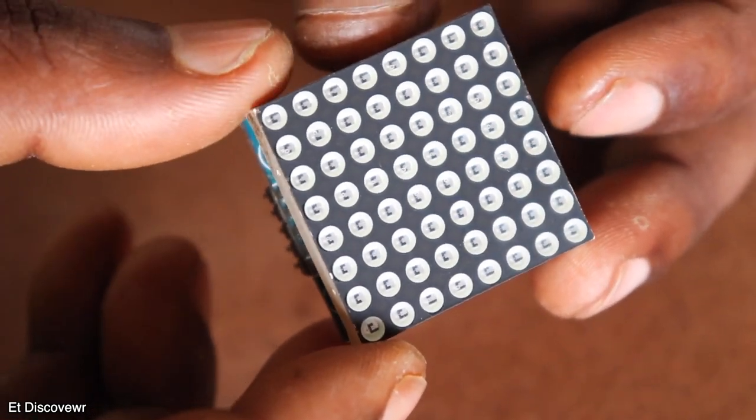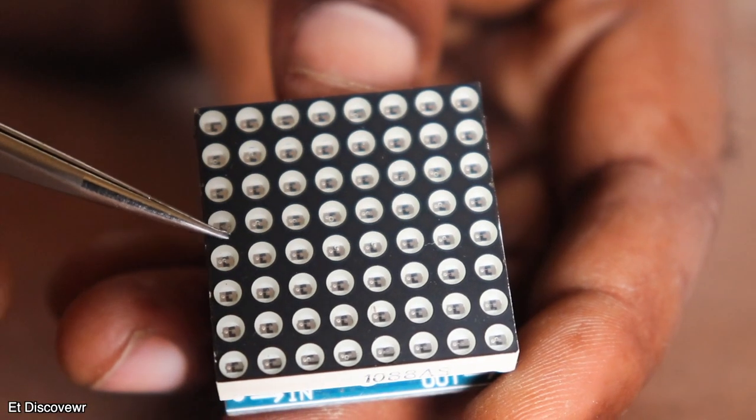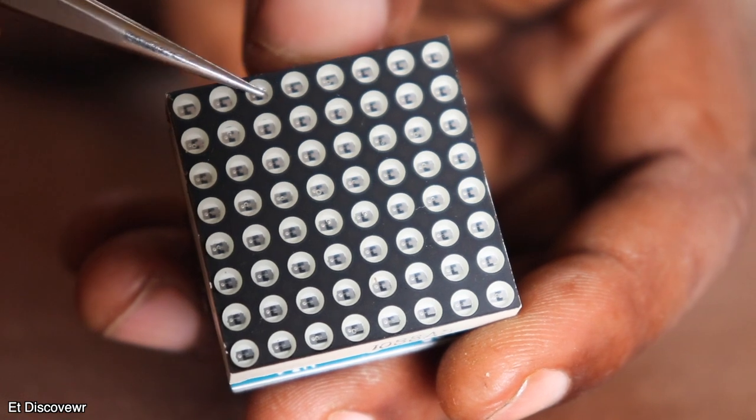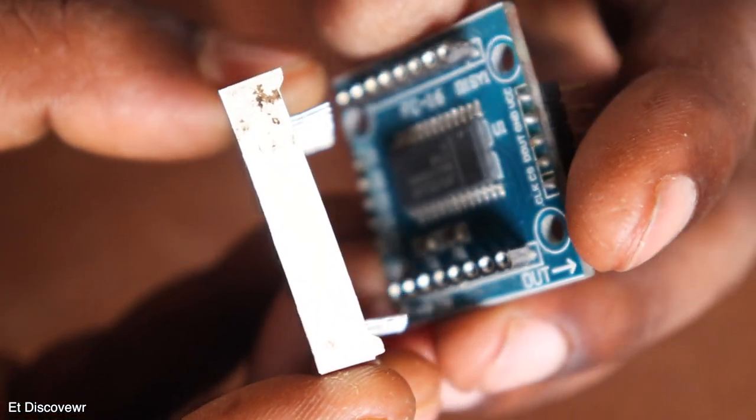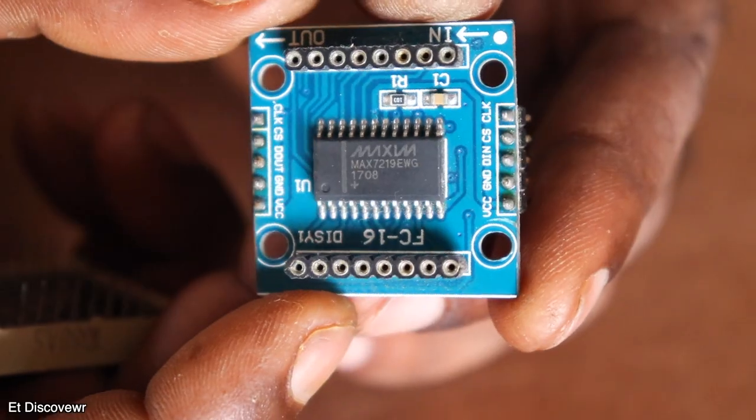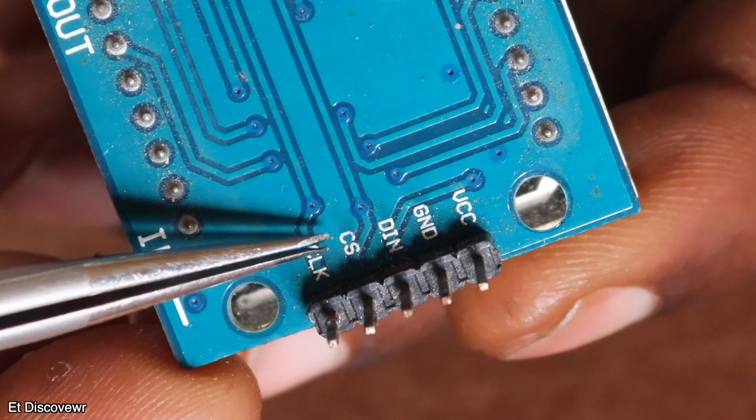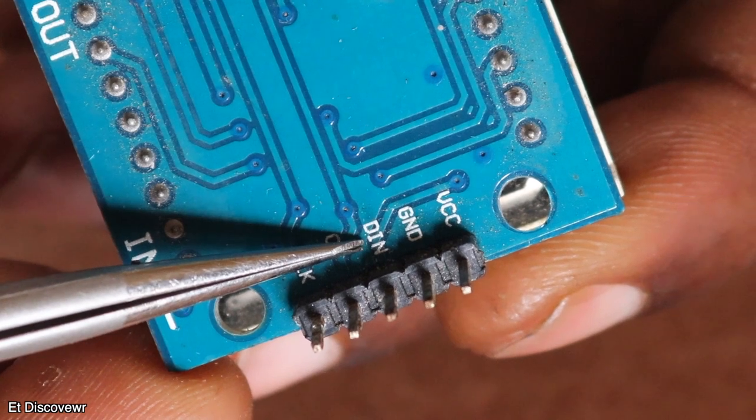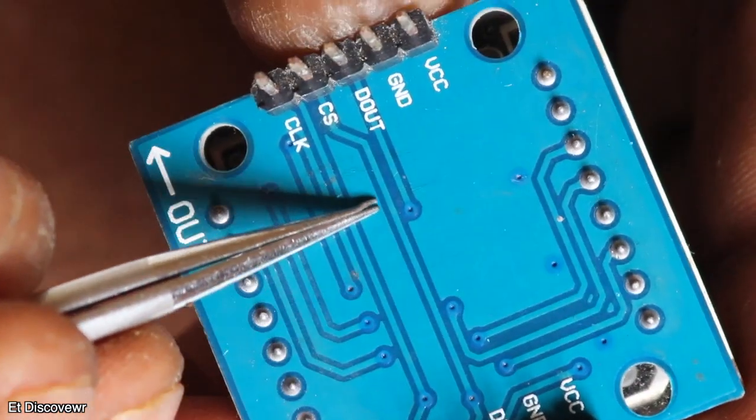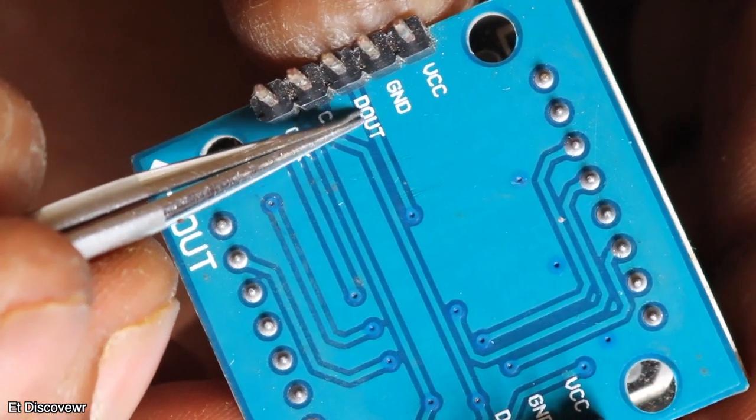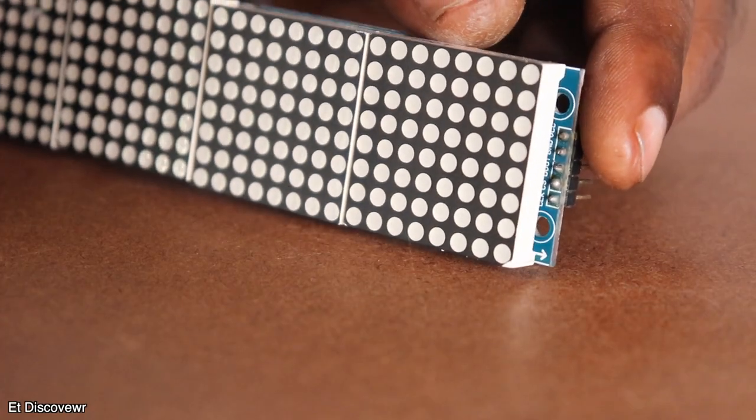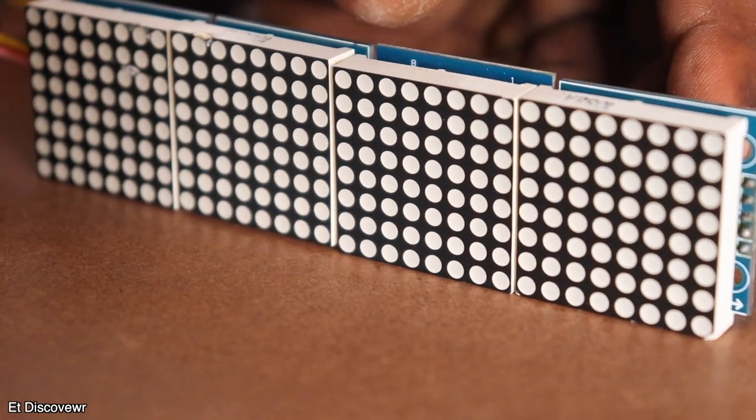I decided to use this type of matrix display to make this clock. This matrix display consists of 8x8 pixel. If I open this display you can see inside this MAX7219 IC is controlling this matrix display. Also as an input signal just you need data in, CS and clock pin. You will also see here data output option. With this you can add another display, which allows to combine multiple matrix displays to create a beautiful display.